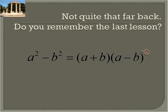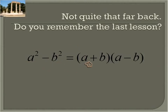Here's what we had for our equation. Remember, this is exactly what we said before. You have a perfect square minus a perfect square: square root of the first plus the square root of the second, times the square root of the first minus the square root of the second.